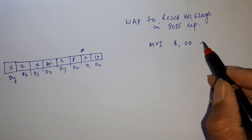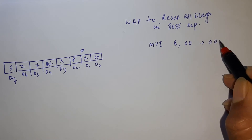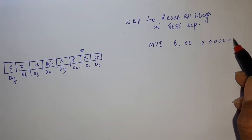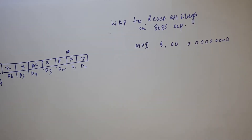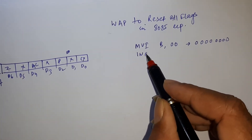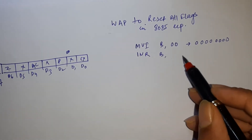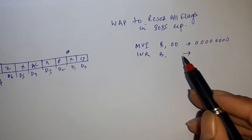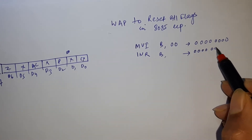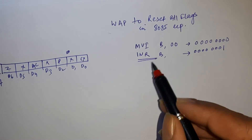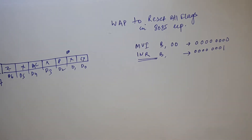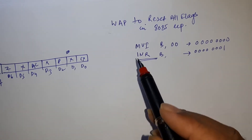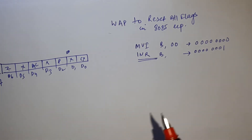Suppose I have taken register B — MVI B and load 00. After this, the content of B will be 00. Now in case of increment (INR B), it will affect all the flags except the carry flag. So after this instruction, every flag is going to be affected except the carry flag.